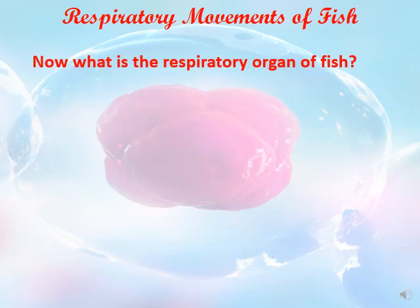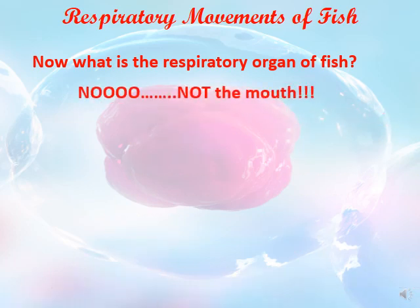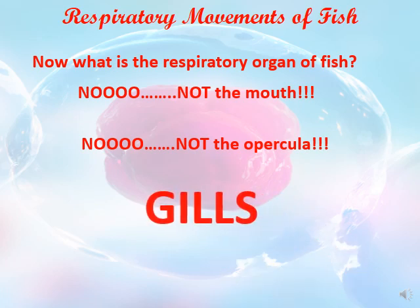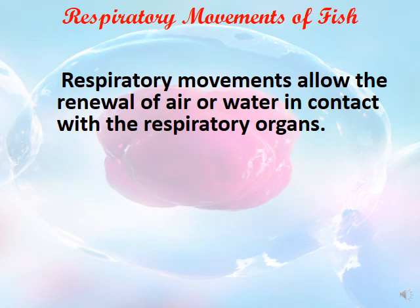So what is the respiratory organ of the fish — is it the operculum, the gill slits, or the mouth? The answer is the gills. Respiratory movements allow the renewal of air or water in contact with the respiratory organ.